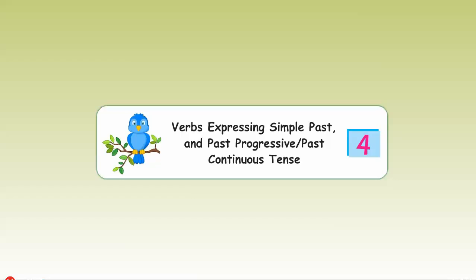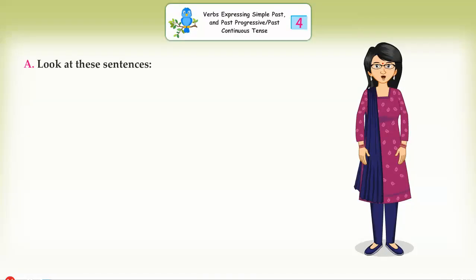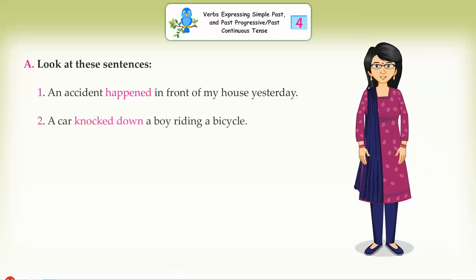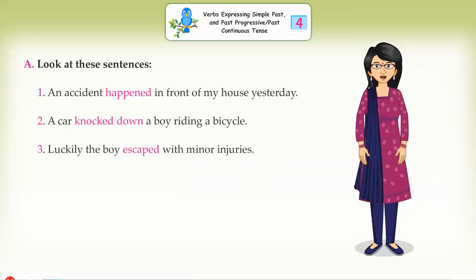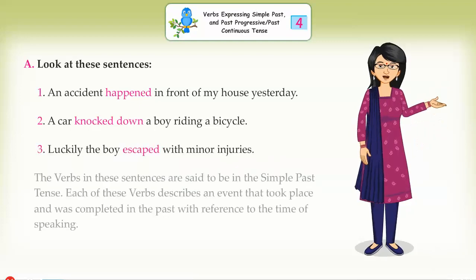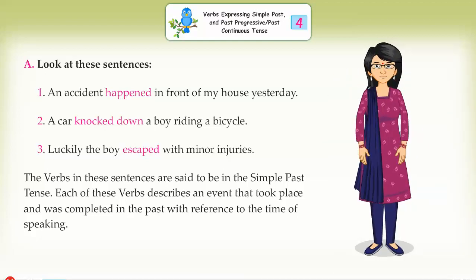Verbs expressing simple past and past progressive, past continuous tense. Look at these sentences. One: An accident happened in front of my house yesterday. Two: A car knocked down a boy riding a bicycle. Three: Luckily the boy escaped with minor injuries. The verbs in these sentences are said to be in the simple past tense. Each of these verbs describes an event that took place and was completed in the past with reference to the time of speaking.